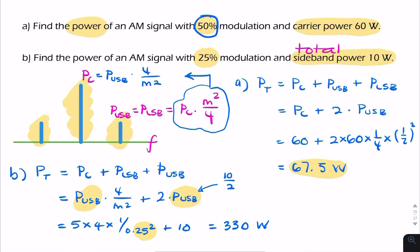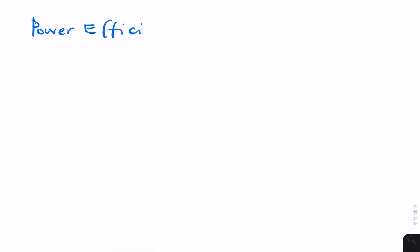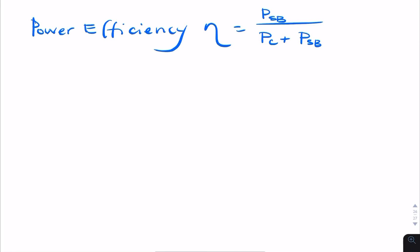Now I said I would show how to derive this expression. Finding it is actually fairly straightforward. We start with the expression for power efficiency, eta. That equals the useful power — the power in the sidebands — divided by the total power, which is the carrier power plus the sideband power. We know that can be written as m squared over 2 plus m squared, where m is the modulation index.